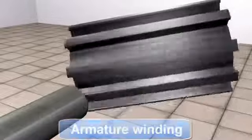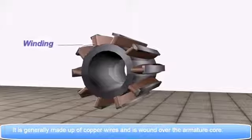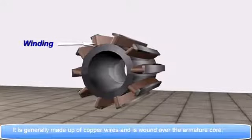Next is Armature winding. It is generally made up of copper wires and is wound over the armature core.